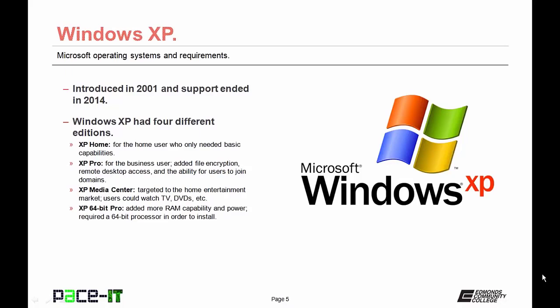Windows XP had four different editions. XP Home was for the home user — very basic with only basic capabilities. XP Professional was for the business user and added file encryption, remote desktop access, and domain joining. XP Media Center was targeted to the home entertainment market, allowing users to watch television, DVDs, and listen to music. XP 64-bit Professional was XP's only 64-bit edition, adding more RAM capability and power, but requiring a 64-bit processor.